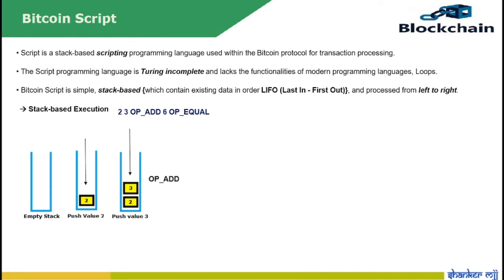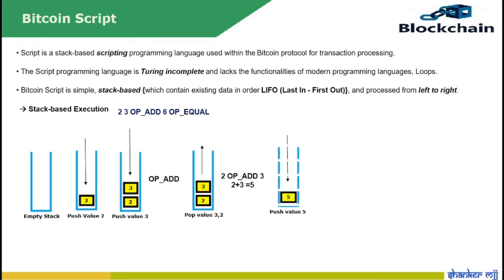The rule is that values 2 and 3 will be pushed into the stack. When an opcode appears, it will pop operands and perform the opcode operation. Now pop numbers 3 and 2 from the stack and add them together because we found the OP_ADD operation to perform addition, and the result 5 is pushed back onto the stack such that it is now the only item in the stack.